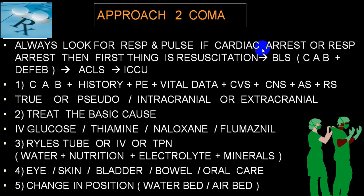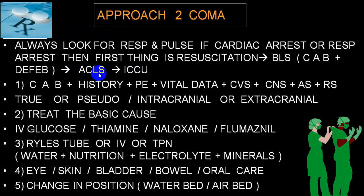If you start resuscitation followed by basic life support — that is circulation, airway, breathing — and if the person has a shockable rhythm, then you can defibrillate and put them into advanced cardiac life support, then shift to ICU. Invariably the person requires CAB: circulation, airway, and breathing. A good history, physical examination, vital data examination, CVS, CNS, alimentary system, respiratory examination. We usually use the word A, B, C, D, E.